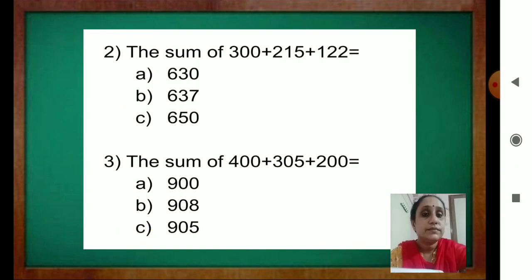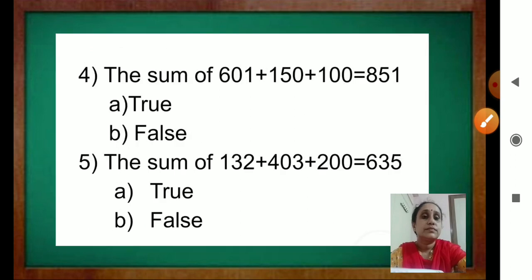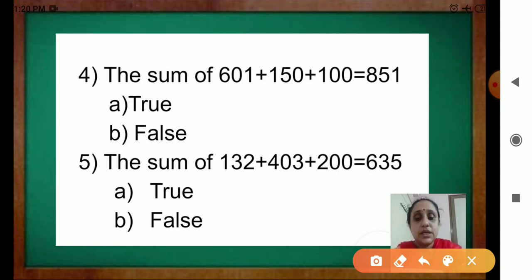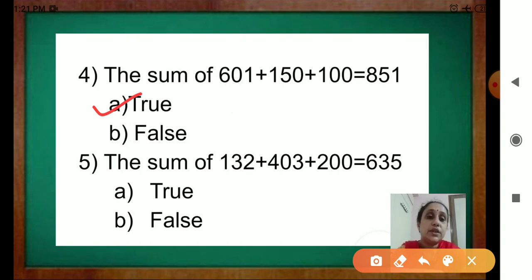Now question 3: the sum of 400 plus 305 plus 200 equals? The answer is 905. Now question 4: the sum of 601 plus 150 plus 100 is equal to 851. You have to add and see if the answer is correct — it will be true. Yes, you will get 851, so it is true. Now the next one: the sum of 132 plus 403 plus 200 equal to 635 — you check whether it is true or false. The answer is false; you will not get 635. Check what you are getting.